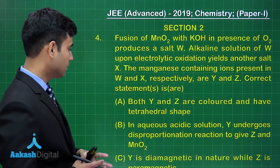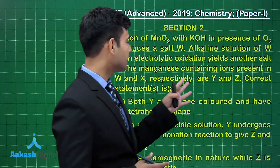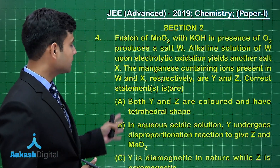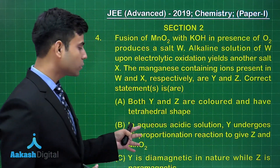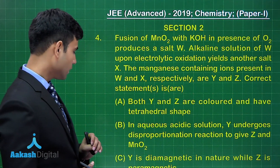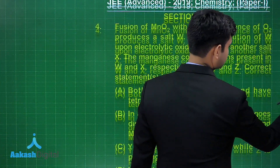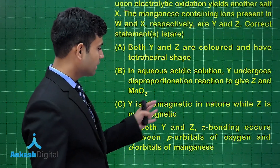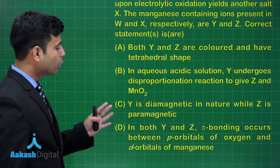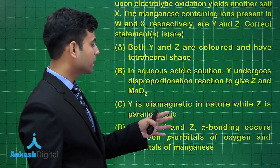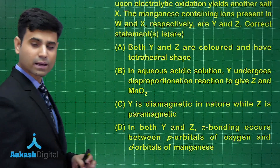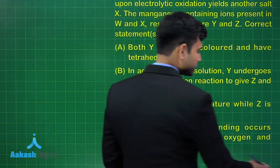Statement A says both Y and Z are colored and have tetrahedral shape. Statement B says in aqueous acidic solution, Y undergoes disproportionation reaction to give Z and MnO2. Statement C says Y is diamagnetic in nature while Z is paramagnetic in nature. Statement D says in both Y and Z, pi bonding occurs between P orbitals of oxygen and D orbitals of manganese.